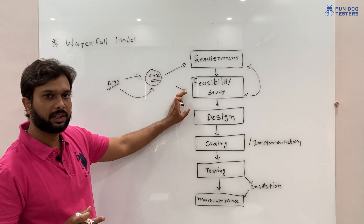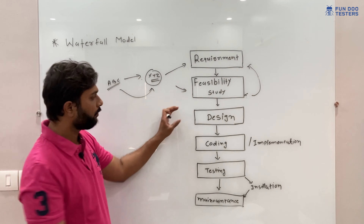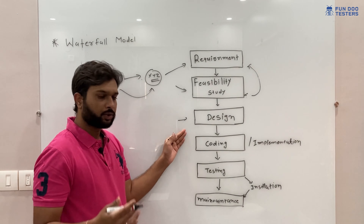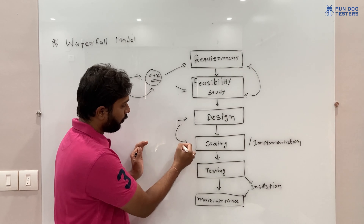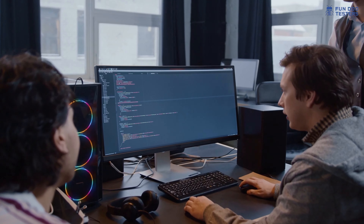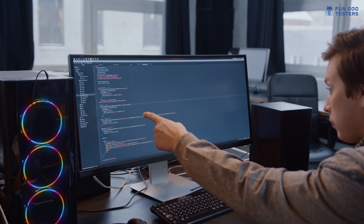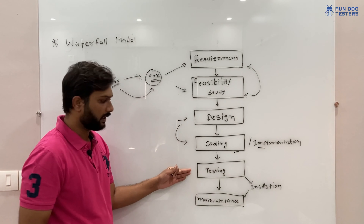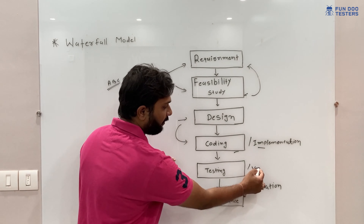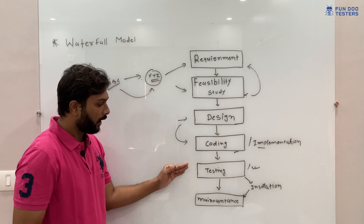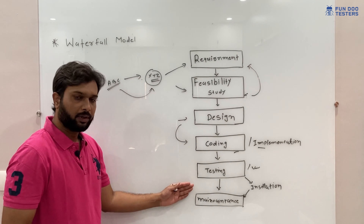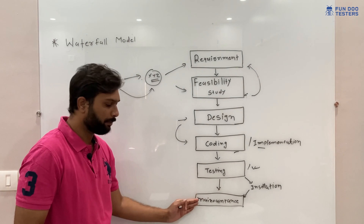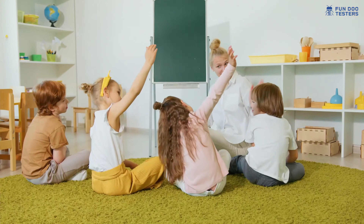Once the feasibility study is done, they move to the design phase, where a proper design of the software is created. Then it goes to coding — also called implementation. Later comes testing, otherwise known as verification. Once testing is done, there is a small phase of installation and then maintenance. This is how the waterfall model works.